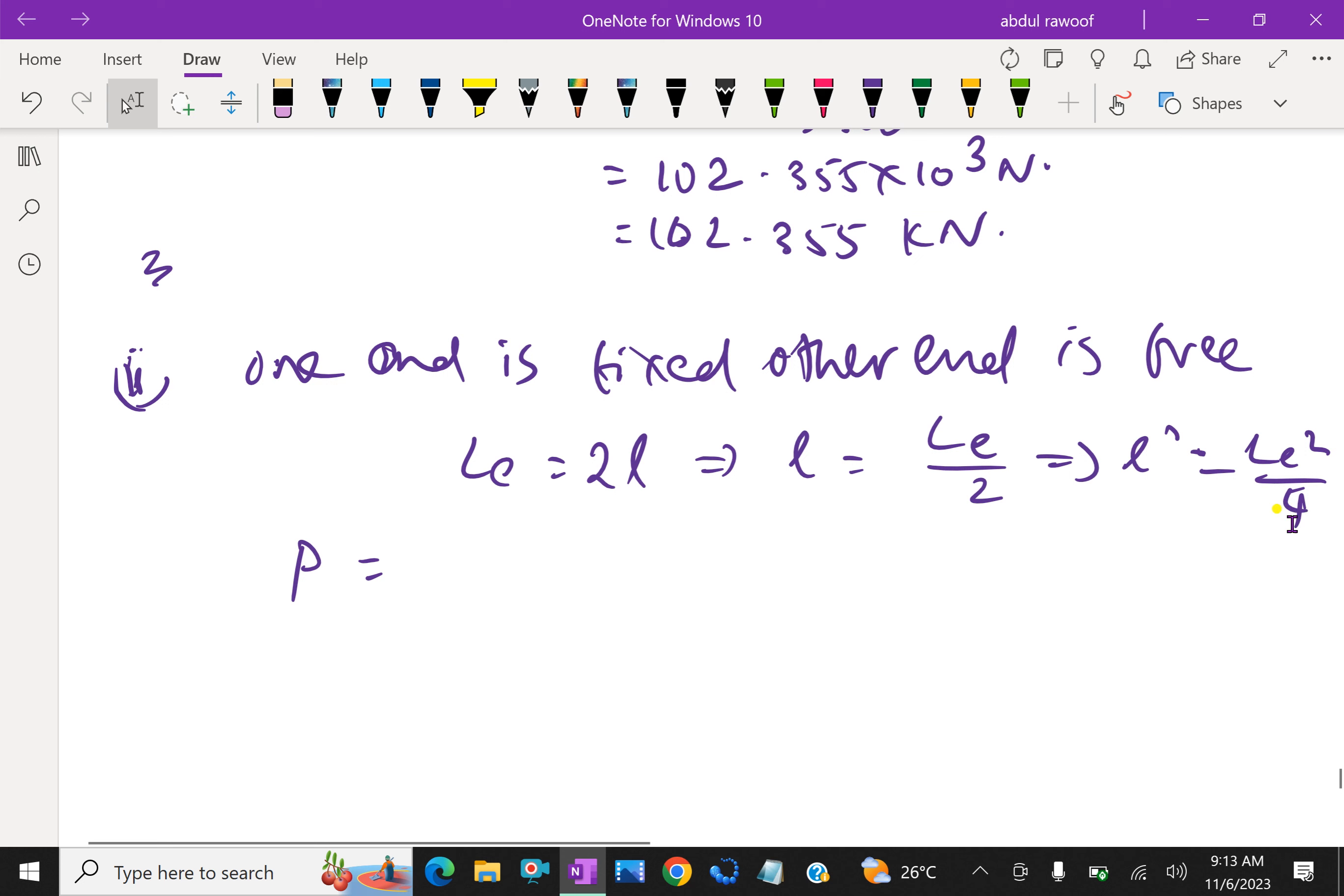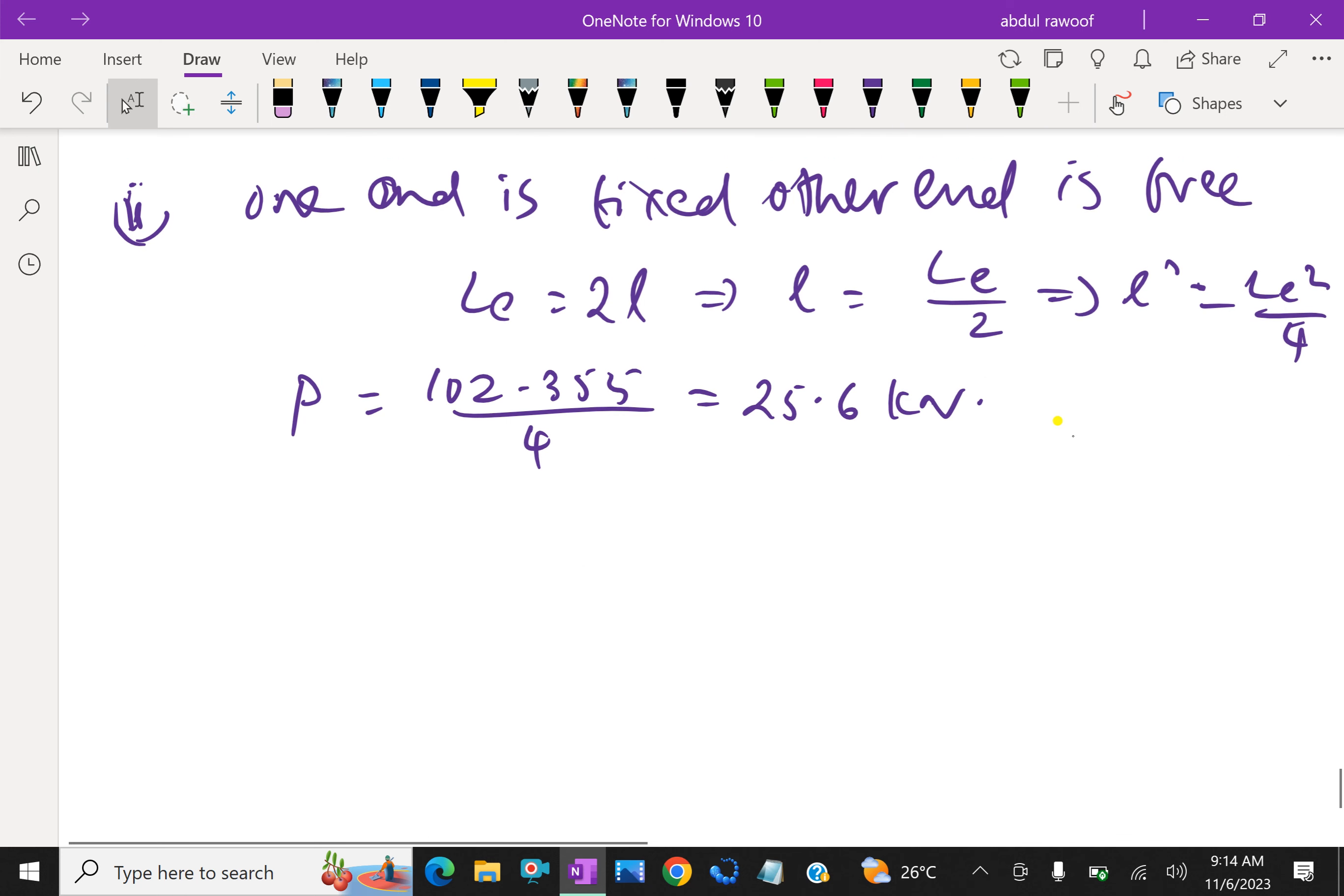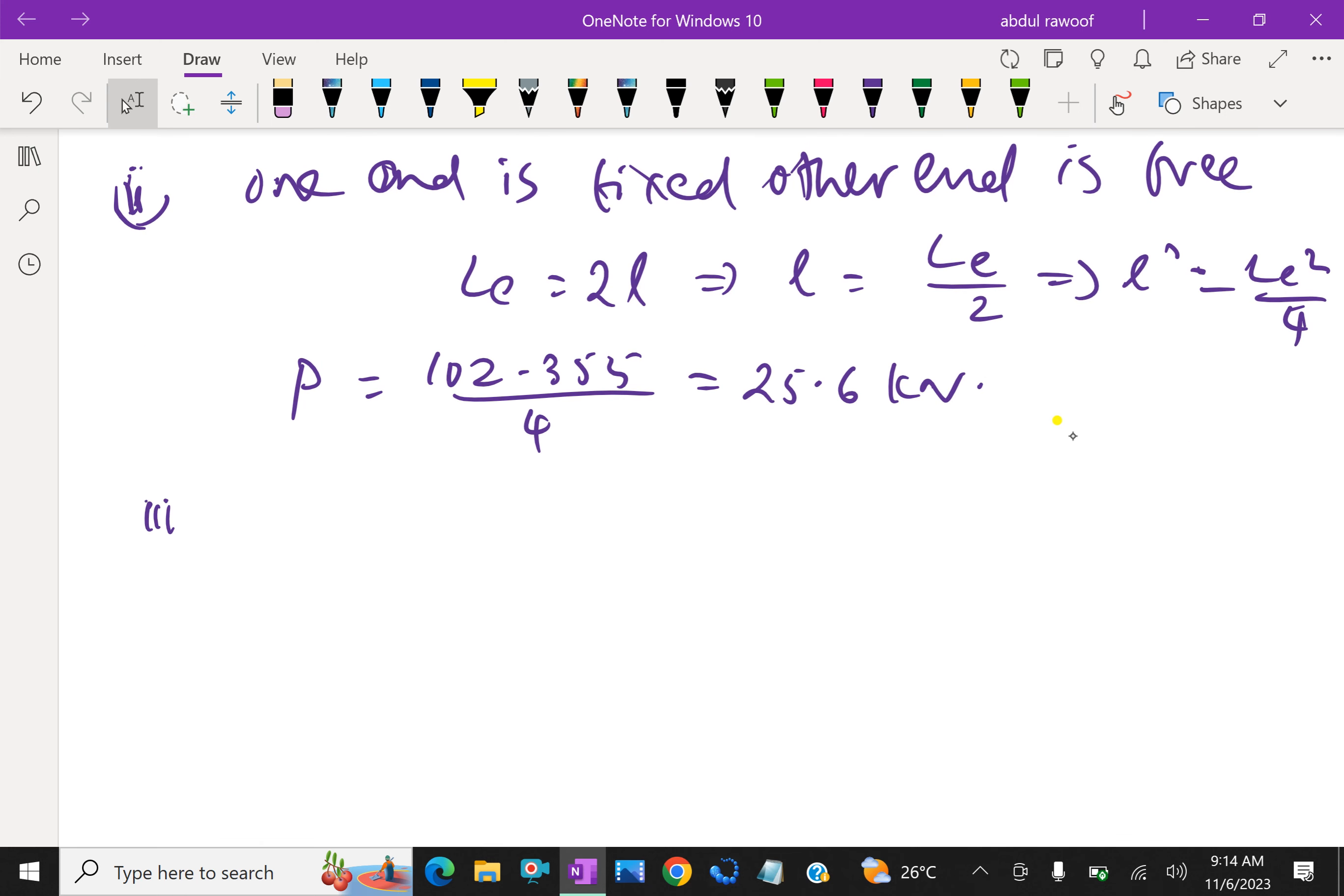So you have to divide by 4, which means I have to multiply by 4 when it goes up. Therefore, crippling load already we have for both end hinged is 102.355 kN, then that is divided by 4 for one end fixed, other end is free, which gives 25.6 kN crippling load. Then third part.